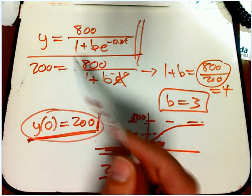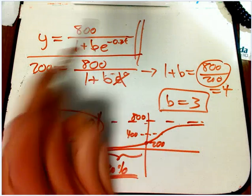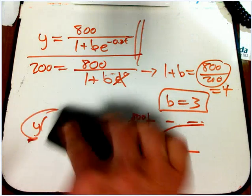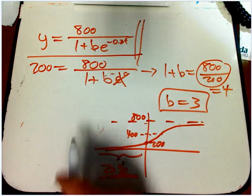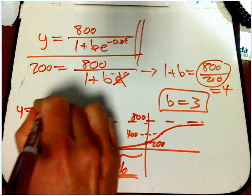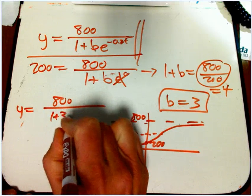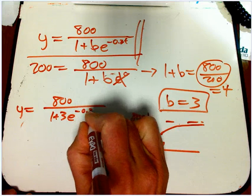I wouldn't memorize that at all. I would just say, it's a parameter I can solve, because I have a data point to solve for. So, what this is, it should be Y equals 800 over 1 plus 3, E to the minus 0.2T.